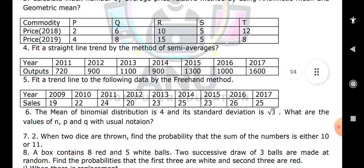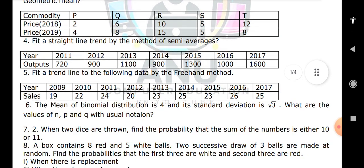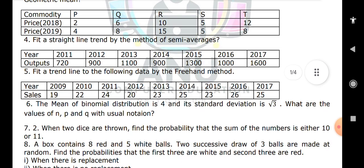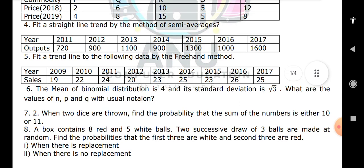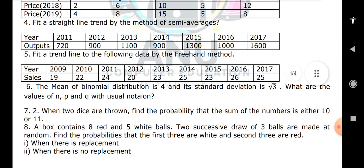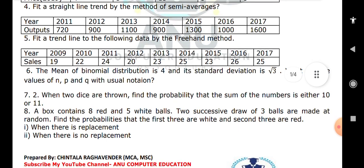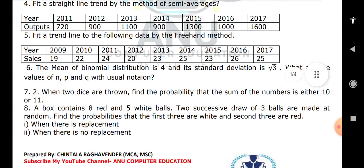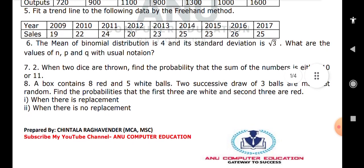Next, the binomial distribution: mean and standard deviation is root 3. Find the values of n, p, and q. This is one of the very important questions. When two dice are thrown, what is the sum of numbers either 10 or 11? A box contains eight red balls and five white balls - this is a very important question with replacement and without replacement. These are all four mark questions.